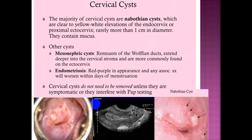Cervical cysts, or Nabothian cysts: the majority of cervical cysts are Nabothian cysts, which are clear to yellow-white elevations of the endocervix or the proximal ectocervix, rarely more than one centimeter in diameter. They contain mucus, as seen here — these are Nabothian cysts shown above, and they appear on ultrasound.